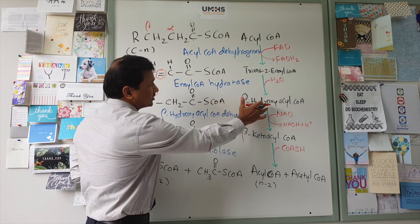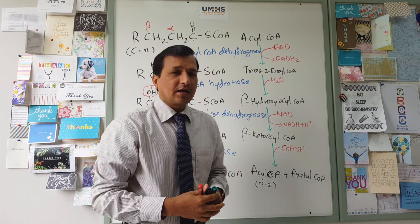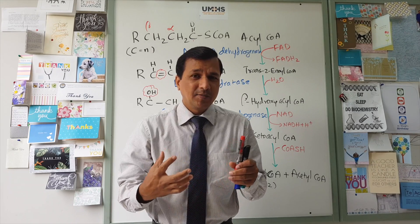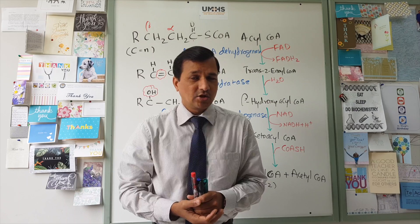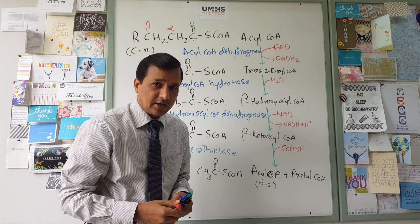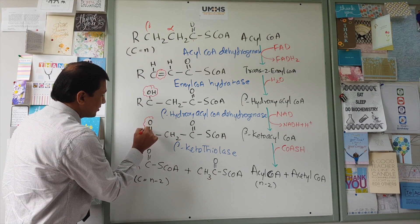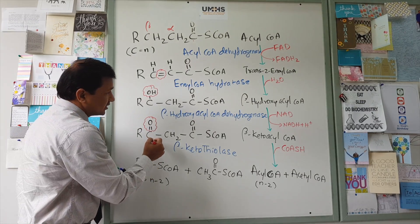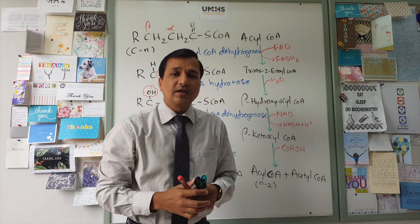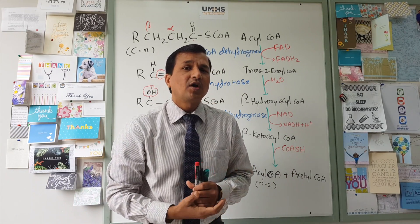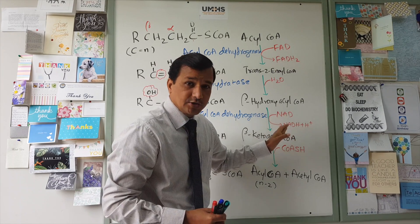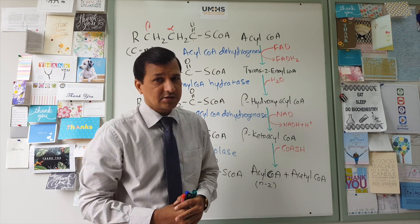Beta-hydroxyacyl-CoA undergoes another oxidation-reduction reaction catalyzed by beta-hydroxyacyl-CoA dehydrogenase. This enzyme converts beta-hydroxyacyl-CoA into beta-ketoacyl-CoA — named because the beta carbon now has a keto group. During this reaction, NAD⁺ is reduced to NADH + H⁺, yielding one NADH.